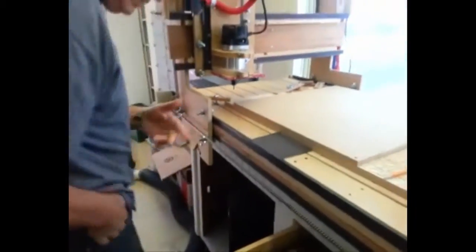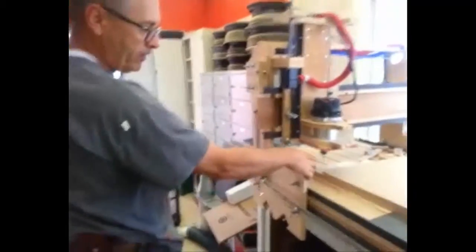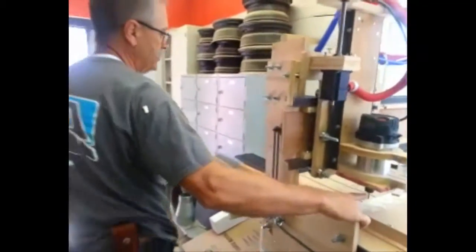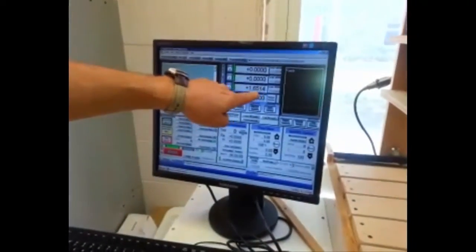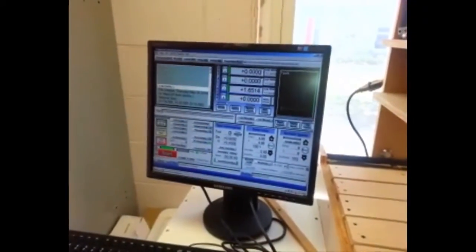Now we've got to go ahead and set the Z offset again for the V-bit. As you can look on the screen here, I'm actually one inch and almost a little over five-eighths high. So I'm just going to step down.